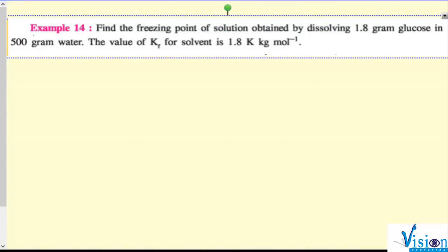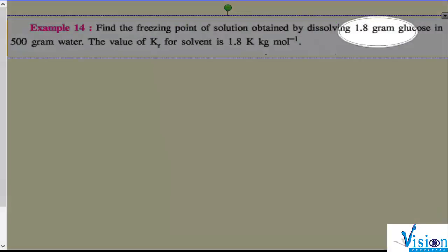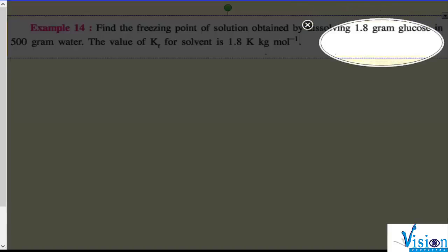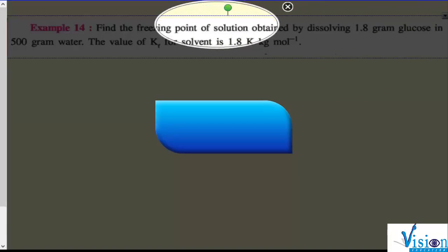Let's continue further with one illustration from your book, Example Number 14. It says find the freezing point. What we need to find out is Tf, find the freezing point of a solution obtained by dissolving 1.8 gram glucose.